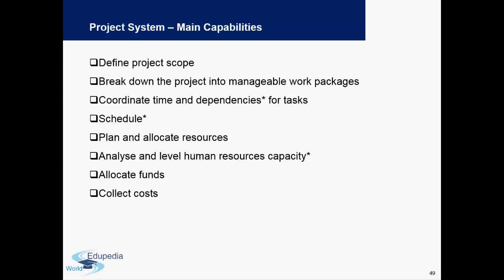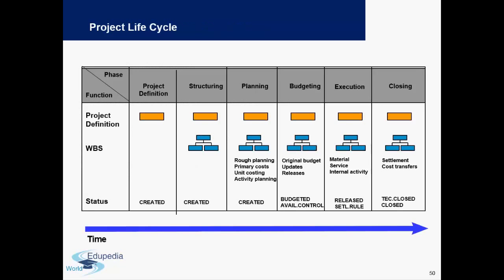What Project System does is it defines the project scope. If there is a project within an organization which needs to be implemented, SAP has this capability to do it. It breaks down the project into manageable work packages, coordinates the time and dependencies for the tasks, provides a schedule, and plans and allocates the resources in the project. It also analyzes and levels the human resource capacity, allocates the funds, and collects the costs for the project.